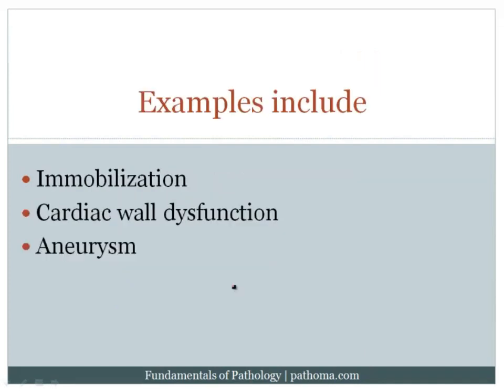For example, immobilization increases the risk for thrombosis. We're well aware of the increased risk of DVT if the patient is not moving around. That's because there's stasis of the blood, and when there's stasis, there can be activation of the coagulation cascade, which can then result in a thrombus.